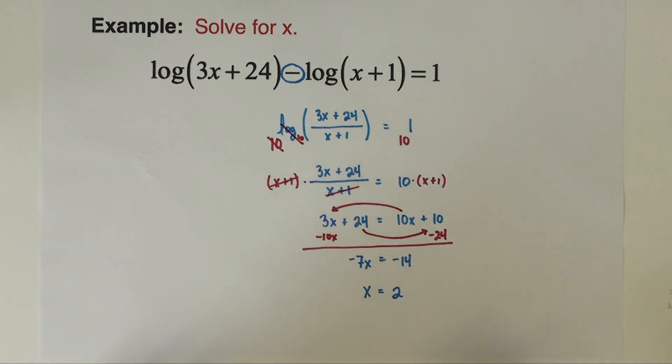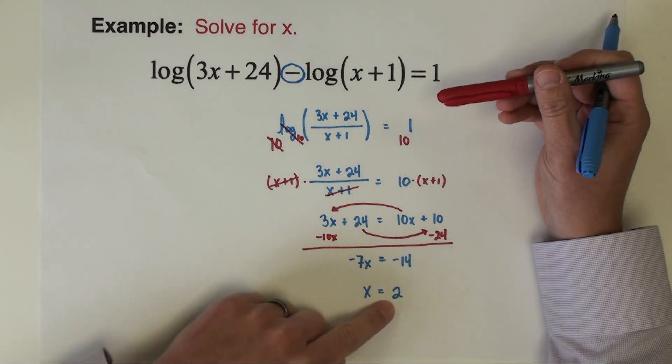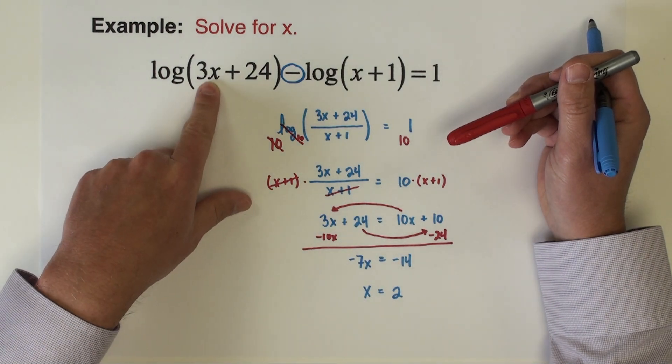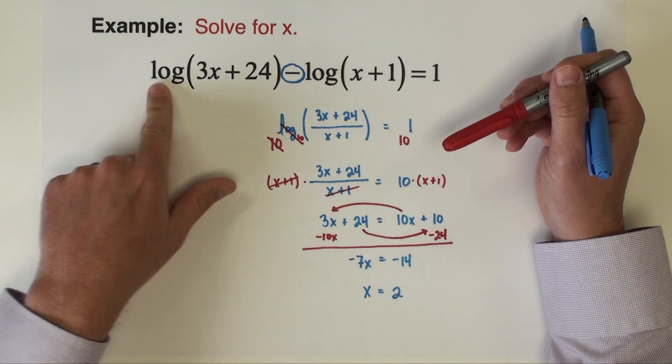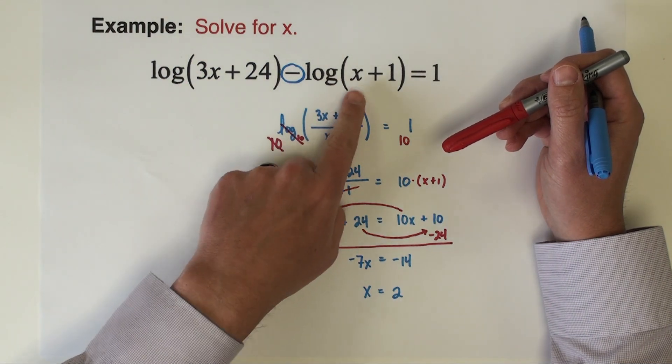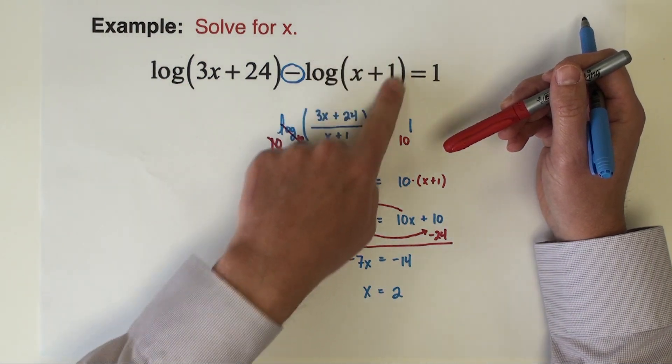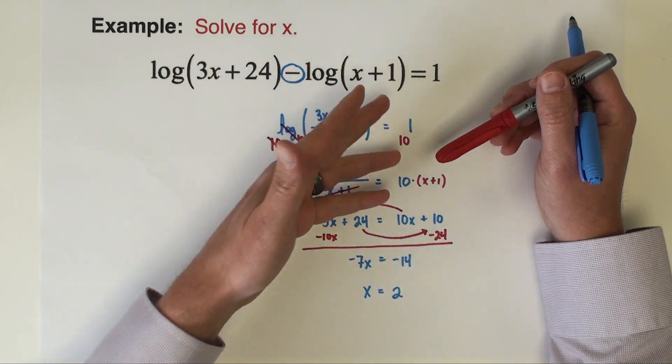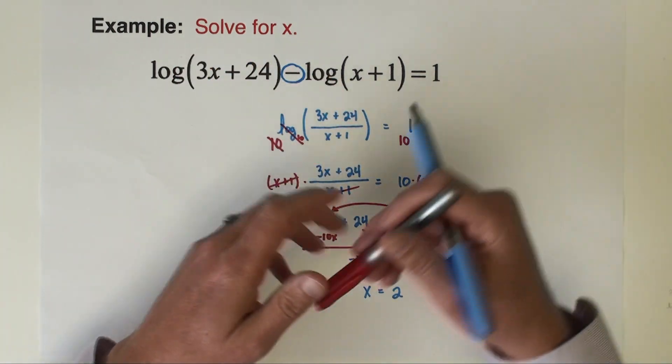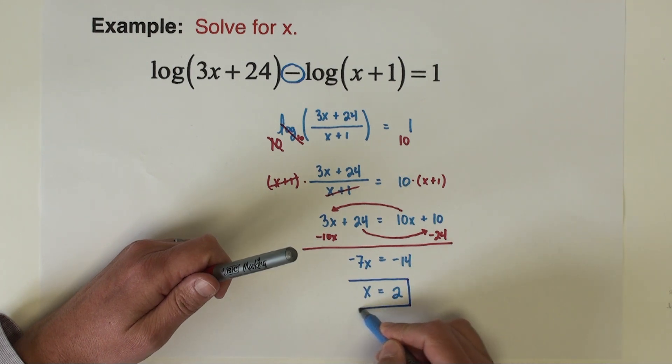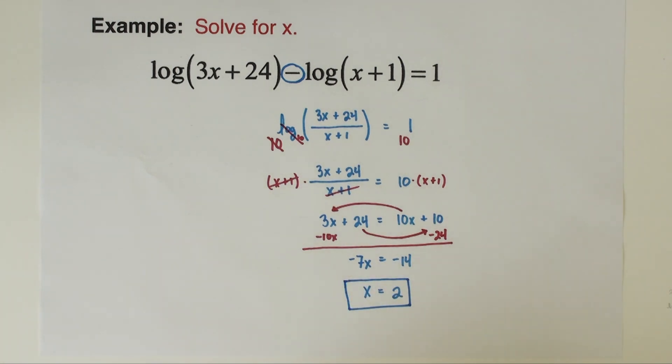Like in the last problem, you should get in the practice of checking your answers with every log equation to make sure you don't create any problems with logarithms of negative numbers or zeros. If I take the 2 and place it in here: 3 times 2 plus 24 is 30, log of 30 is fine. If I put 2 here, 2 plus 1 is 3, log of 3 is fine. Because 30 and 3 are positive numbers, I can do those logarithms. Our solution then is x equals 2.